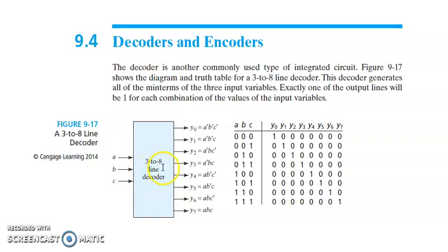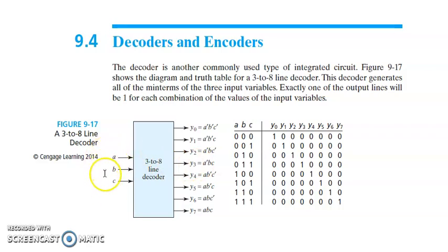The 4-to-10 decoder is used when converting BCD to decimal. BCD inputs range from 0 to 9, and to represent 9 we need 4 inputs. So BCD to decimal has only 10 discrete states, and all remaining states are don't cares. That is how we implement a 4-to-10 decoder.